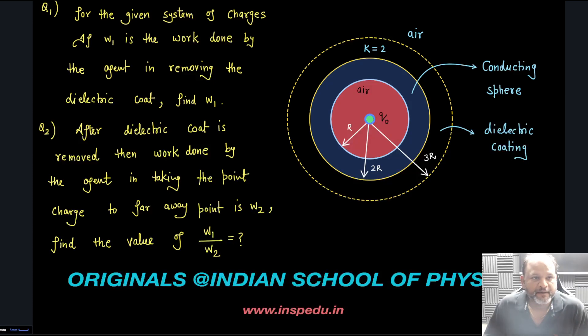Very few people could give the correct answer for this problem. For the given system of charges, if W1 is the work done by the agent in removing the dielectric coat, find W1.